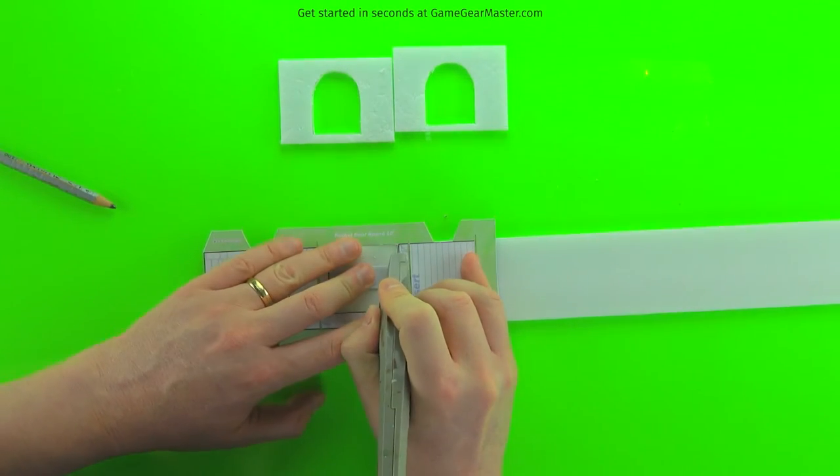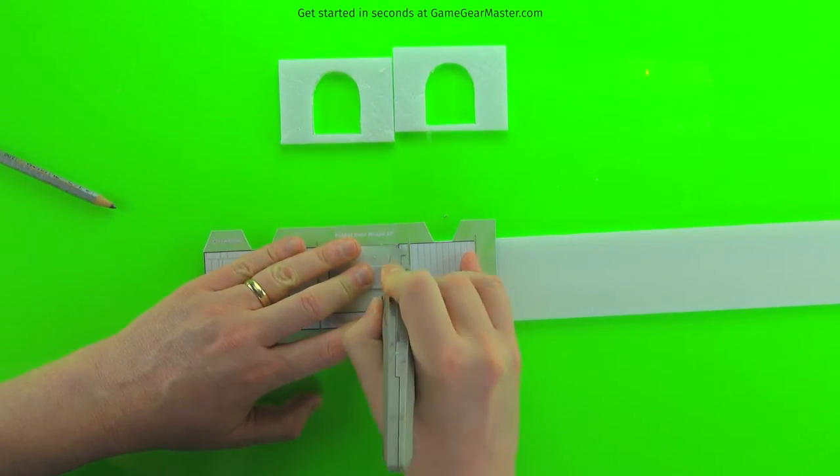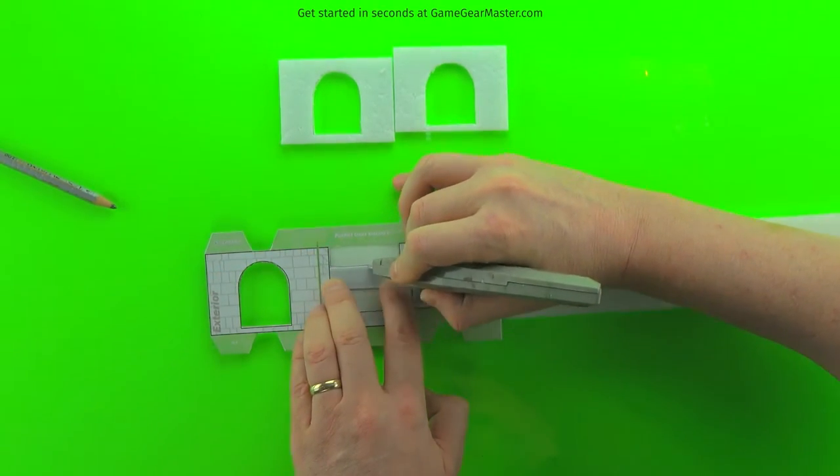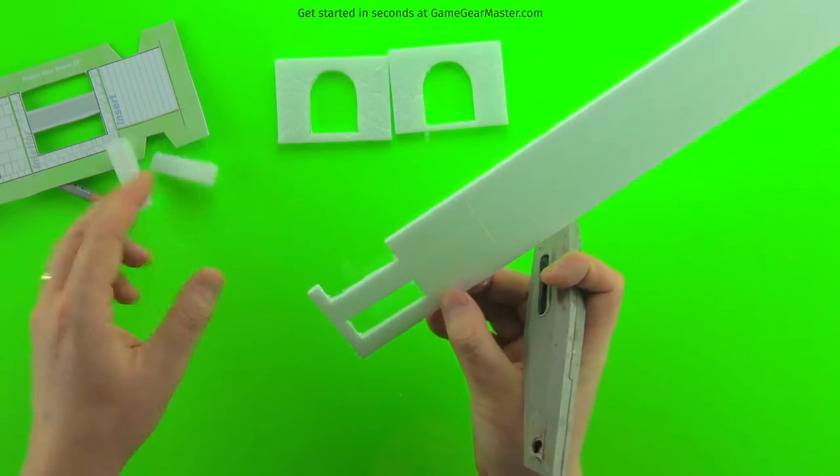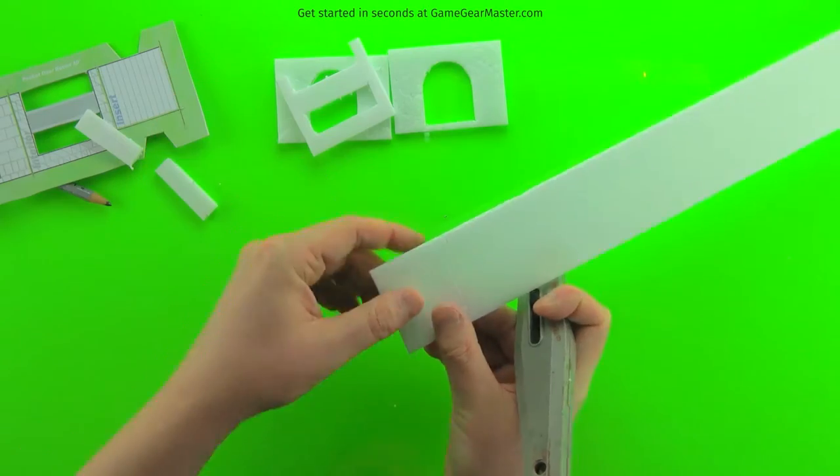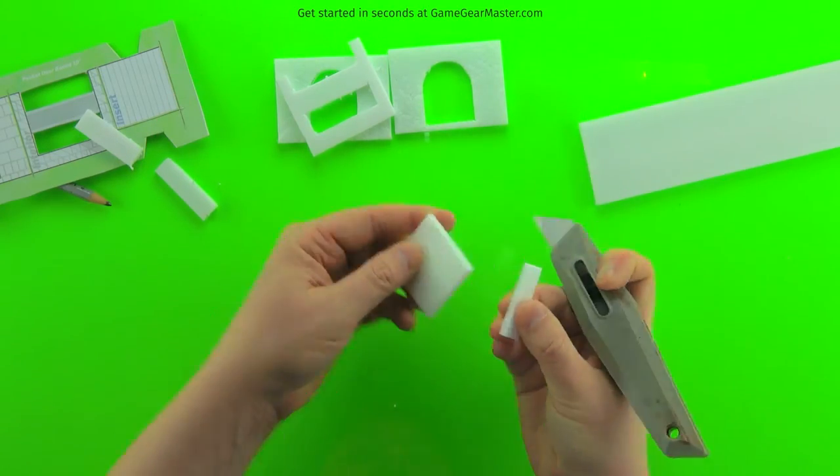And then we're going to cut out the areas in the middle of the pocket itself. And then we'll gently break apart the separate sections at the score lines. Just make sure for that interior pocket piece there, it's got some pretty thin arms, so make sure that you support them when you snap them apart.